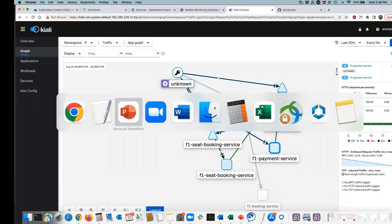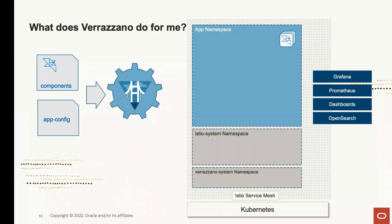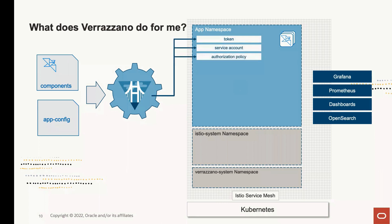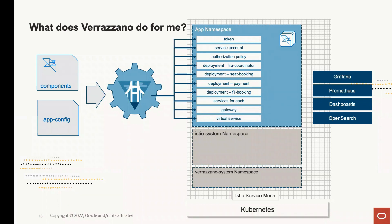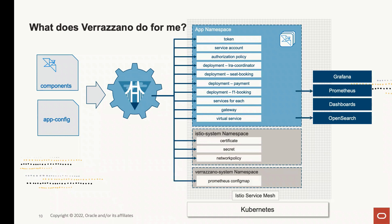Let's switch back to slides and recap what we just did. When I deployed my application, I applied my components and my application configuration. Verrazzano got a token, created a service account using that token, created an authorization policy for that service account, created four different Kubernetes deployments, created Kubernetes services for each deployment, created a gateway and a virtual service for the main microservice, got a new certificate, put that certificate into a secret, created network policies using that secret, updated the Prometheus config map, and started capturing metrics and pushing logs. A whole lot of automation from just two kubectl commands.